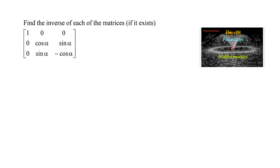Find the inverse of the matrix. Let us consider A is equal to [[1, 0, 0], [0, cosα, sinα], [0, sinα, -cosα]]. We know that A inverse is equal to 1 upon det(A) times adjoint of A, where det(A) is not equal to 0.